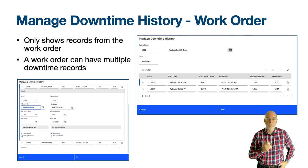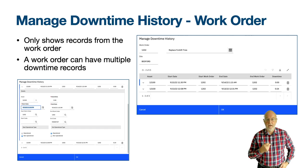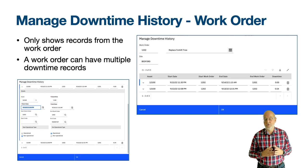One final thought: do you use the Work Order applications or the Assets application to record downtime? If maintenance is involved then I would use a work order so that it is tied to other useful information like labour hours, parts used and the failure report. For operator-initiated downtime, for example minor stop or tooling changes, use the Assets application to record downtime.